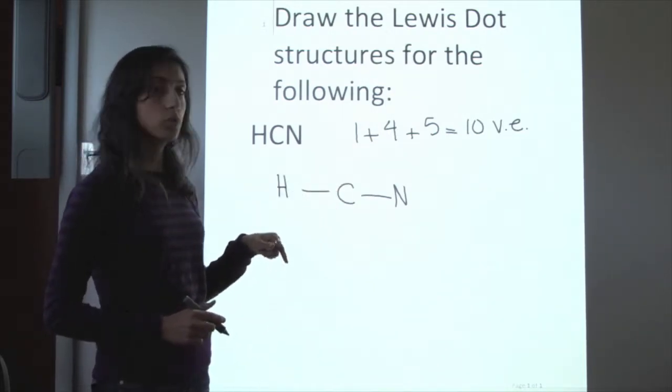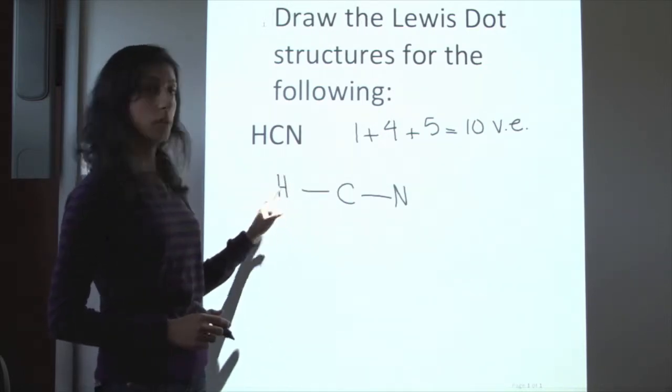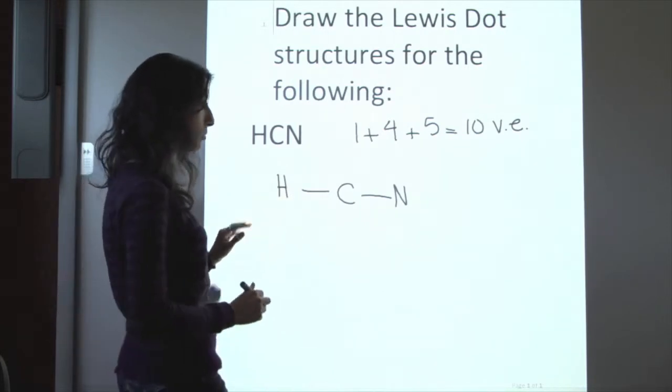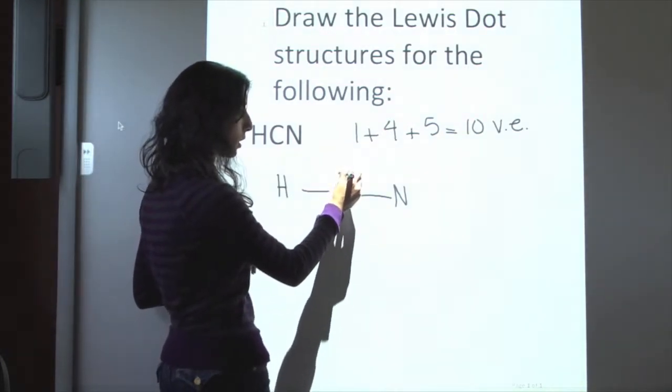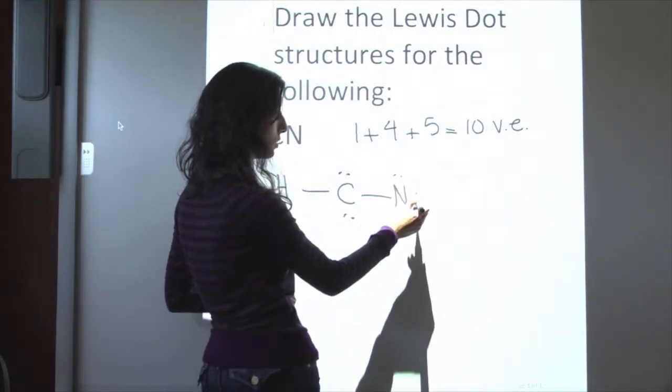The next step is to go ahead and give all of these atoms a full octet. Now, hydrogen is already happy. It has its octet, so we're going to leave it alone. But carbon needs four more electrons and nitrogen needs six more.